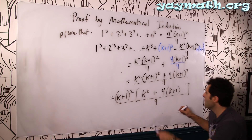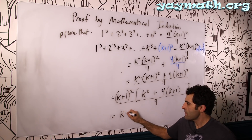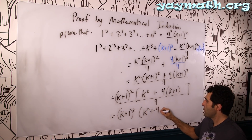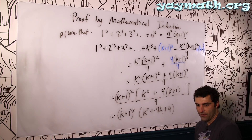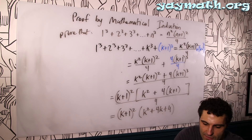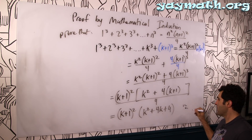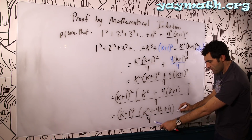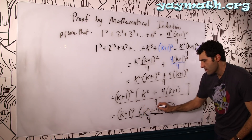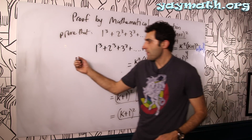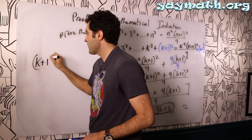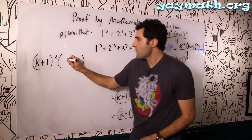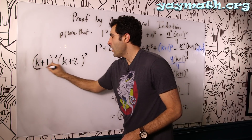Combining like terms inside: this is (k plus 1) squared times (k squared plus 4k plus 4), all over 4. And now you'll see that this factors. So that becomes (k plus 1) squared times (k plus 2) squared, all over 4.